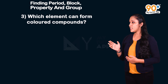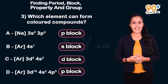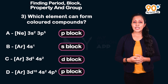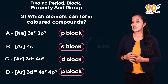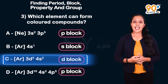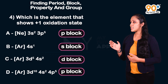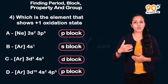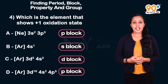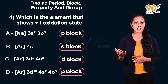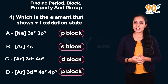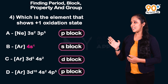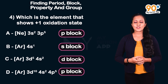Third question: Which element can form colored compounds? D-block elements form colored compounds. Since element C is a d-block element, the answer is element C. Fourth question: Which element shows +1 oxidation state? Element B, when it loses 1 electron from 4s, achieves the subshell electronic configuration of the inert gas argon. So the answer is element B.